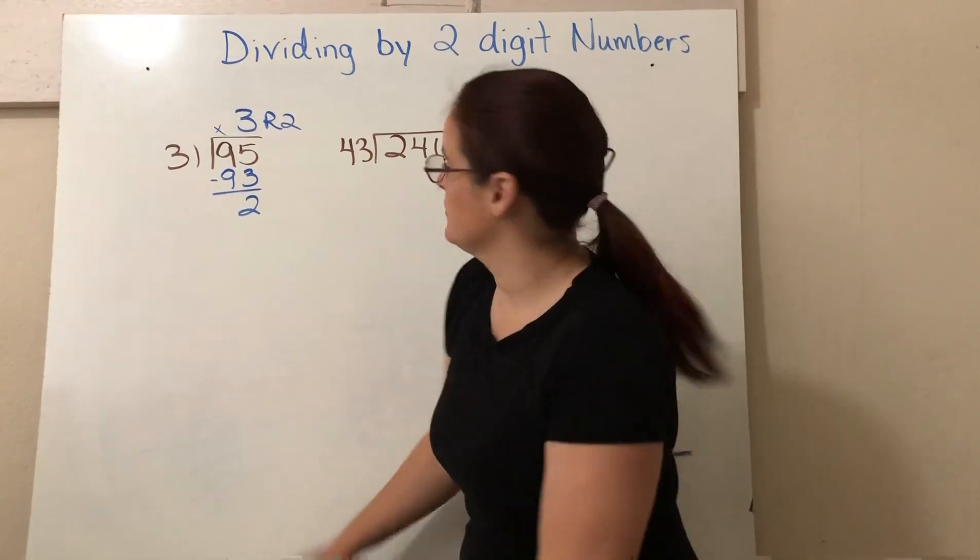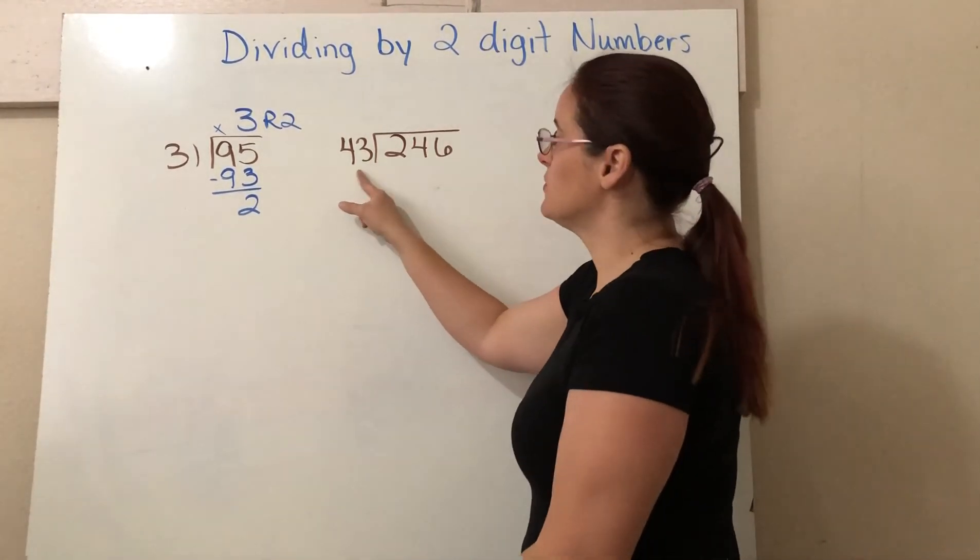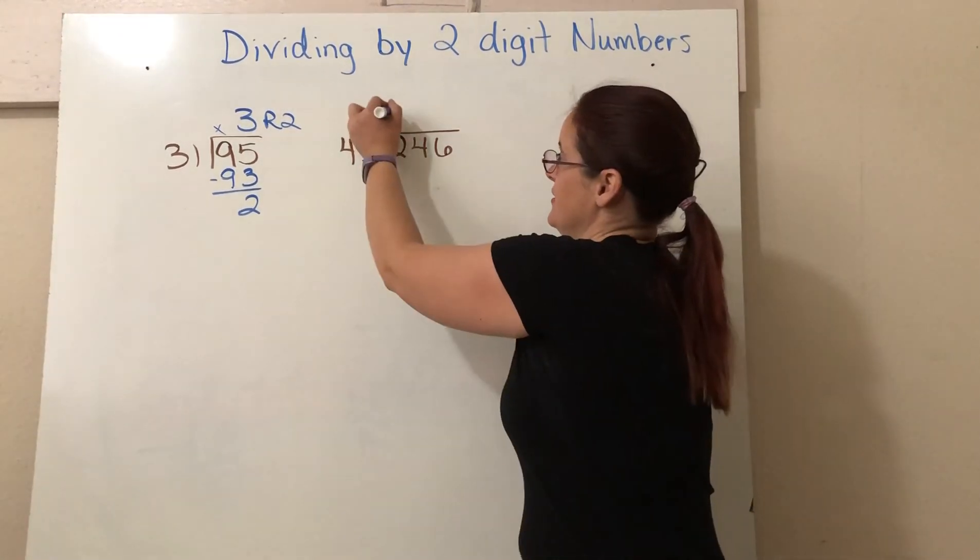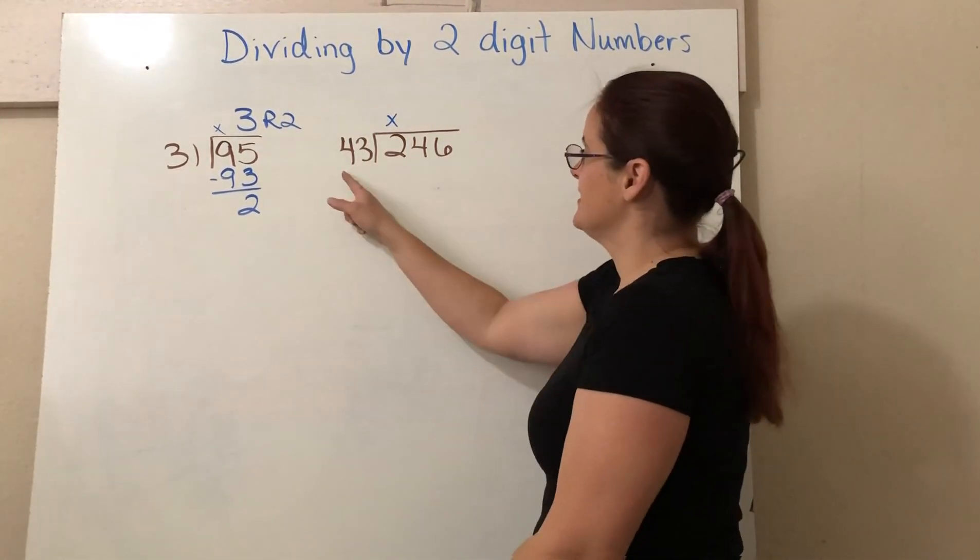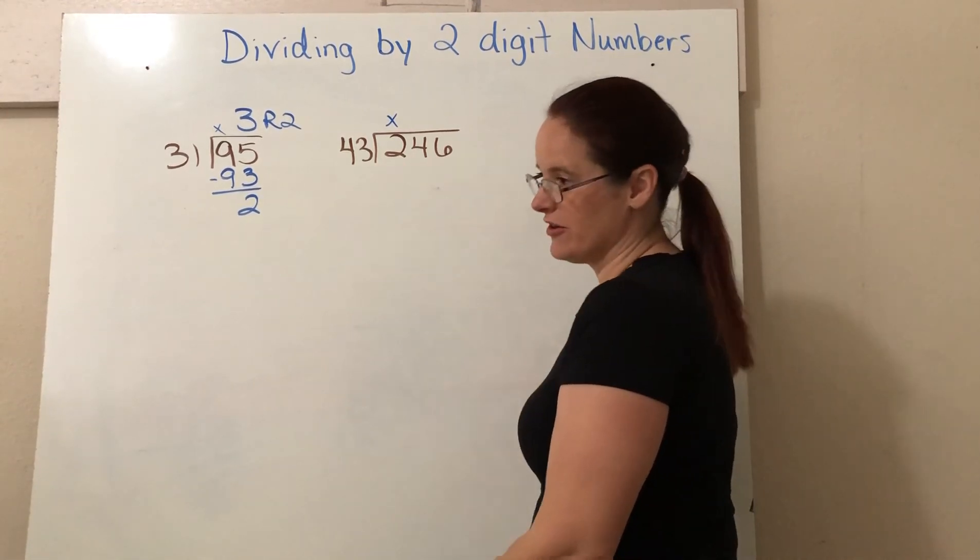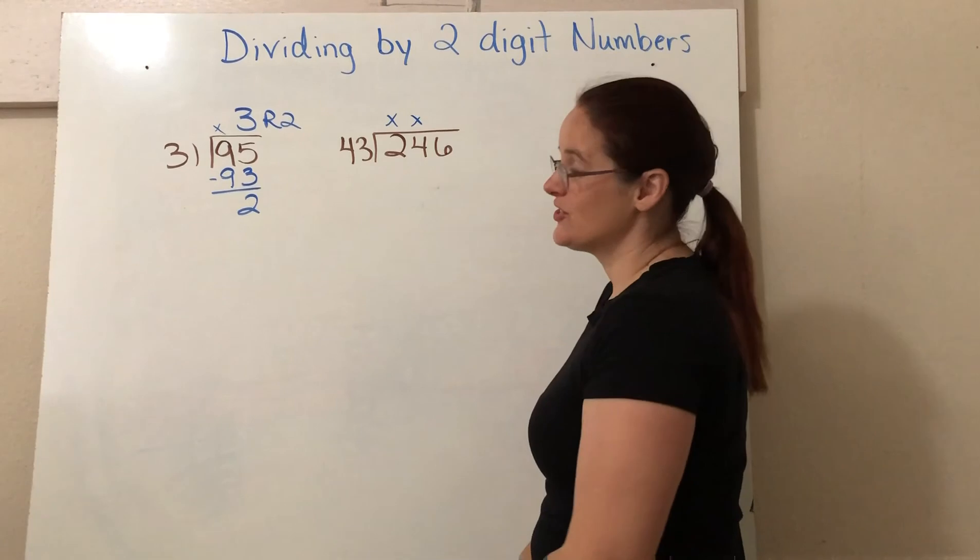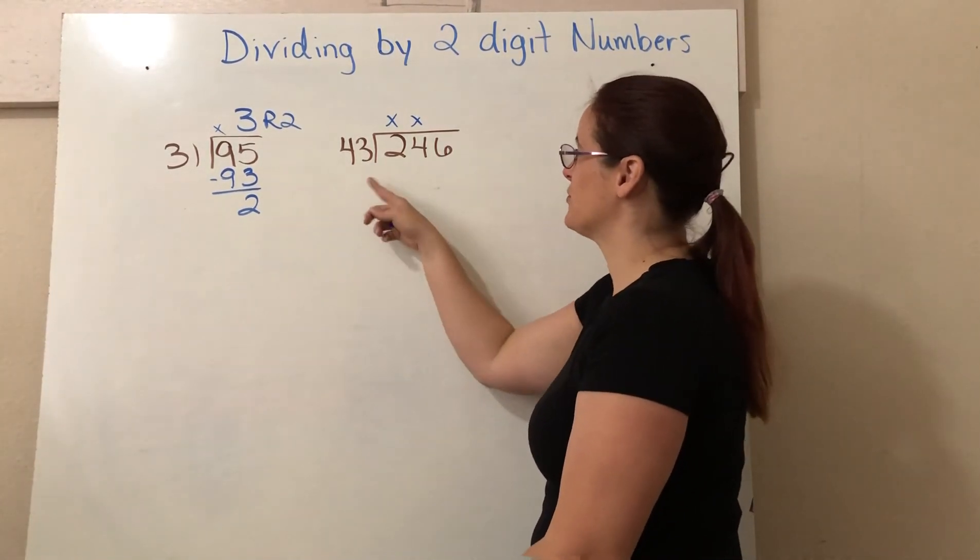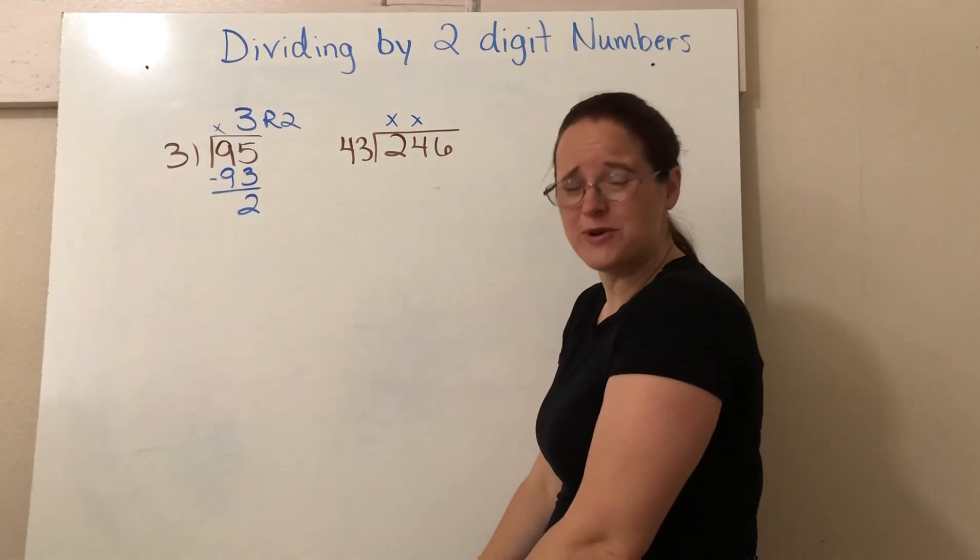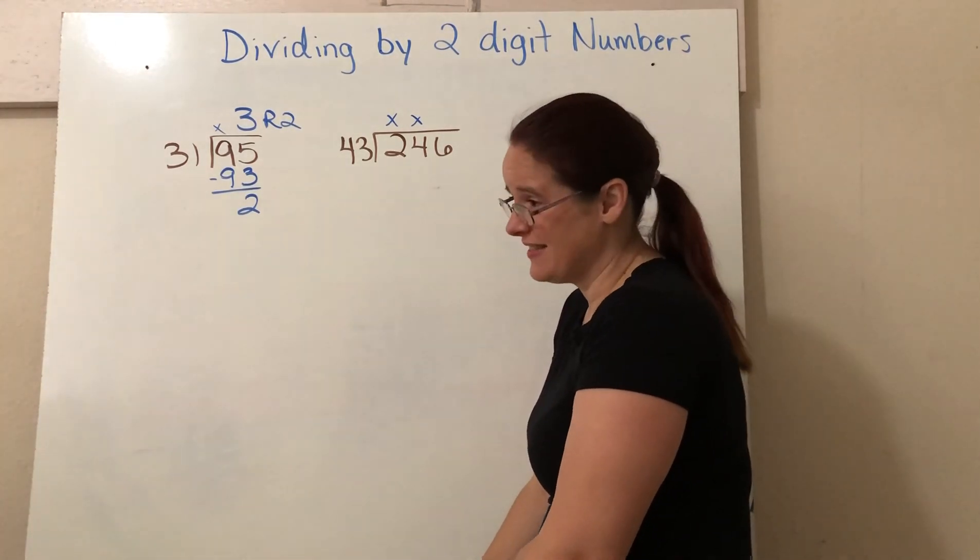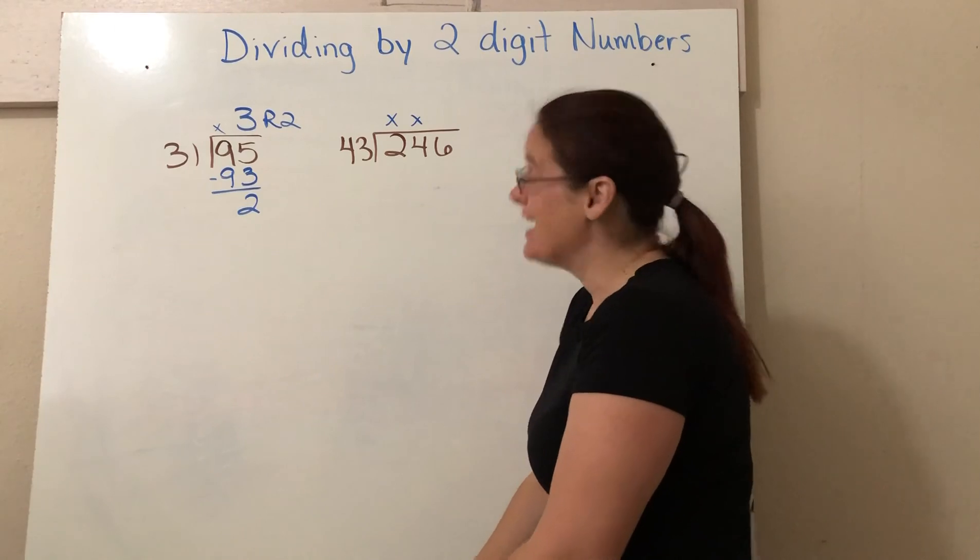Okay. We're going to try that again here with this problem. So does 43 go into 2? No, definitely not. Does 43 go into 24? No, definitely not. This is less. So I have to figure out, gee, how many times does 43 go into 246? I don't want to count by 43 that many times. So I'm going to estimate.